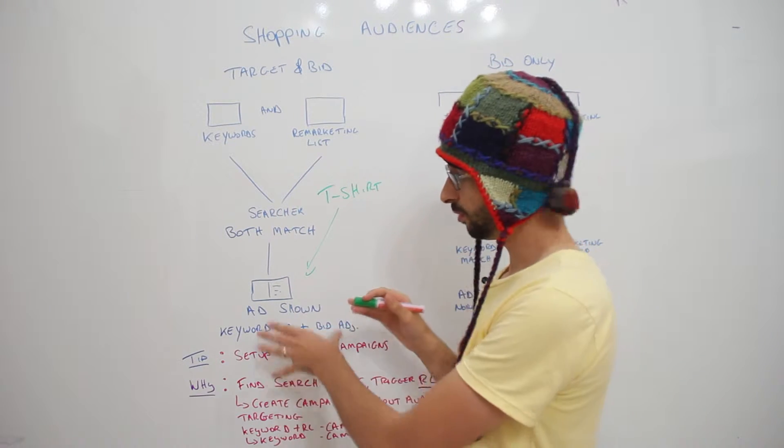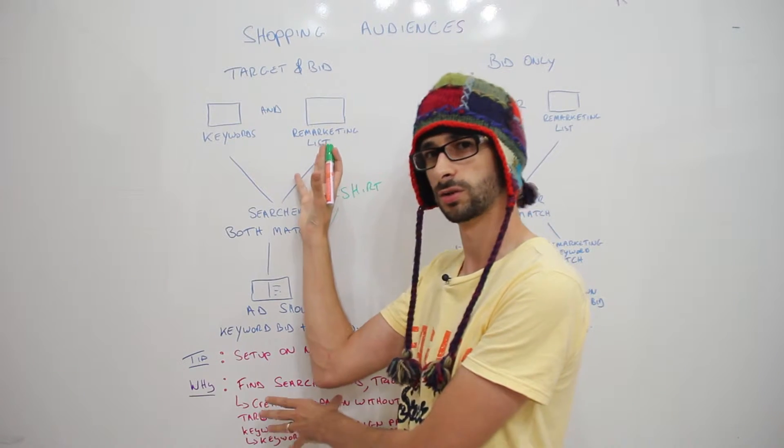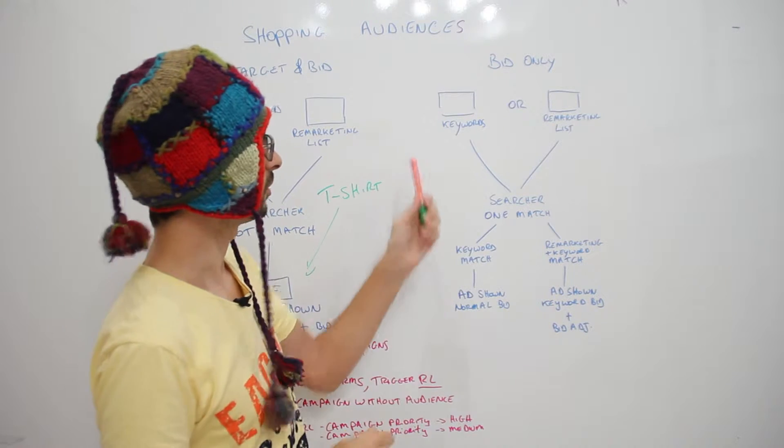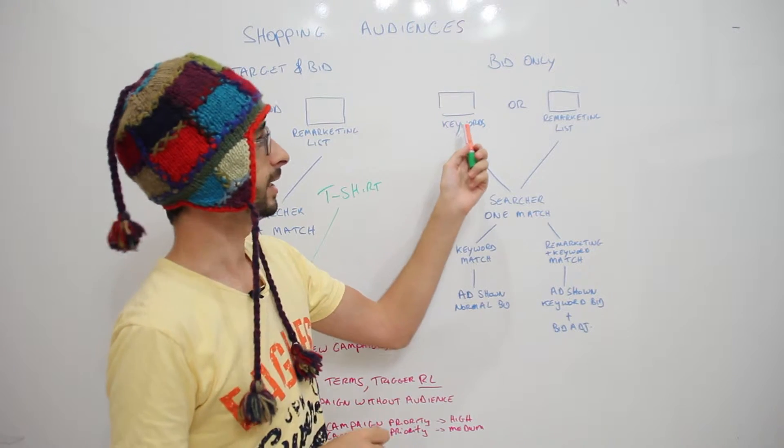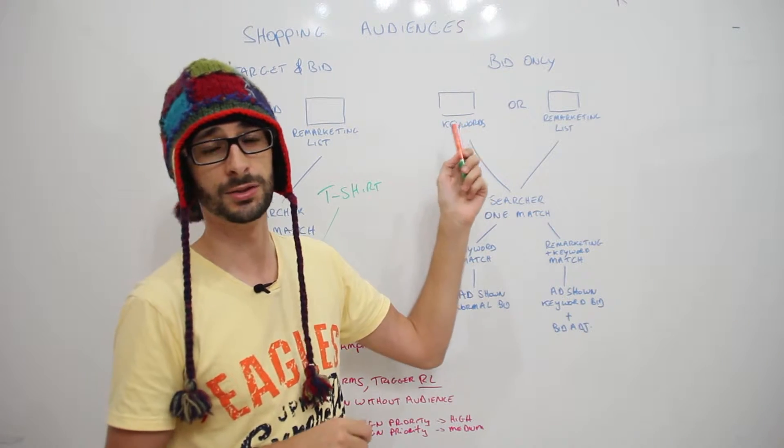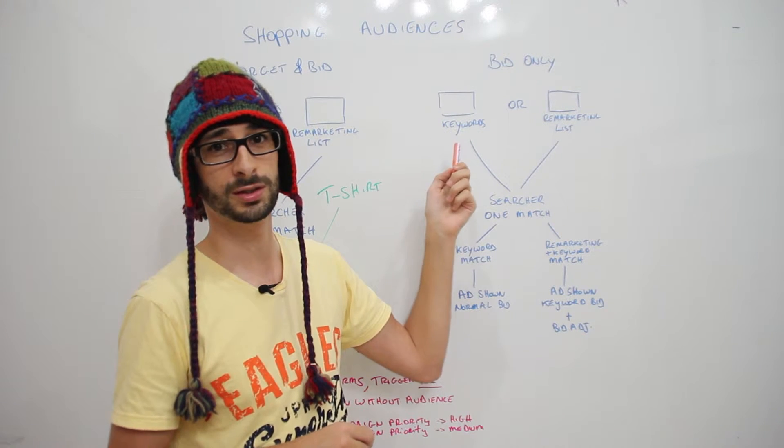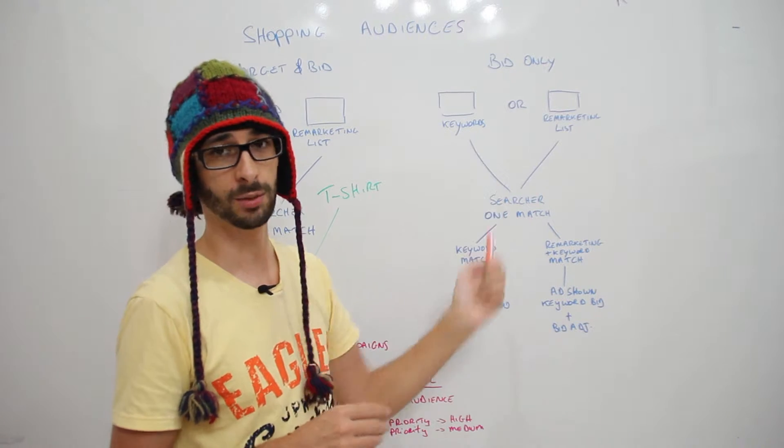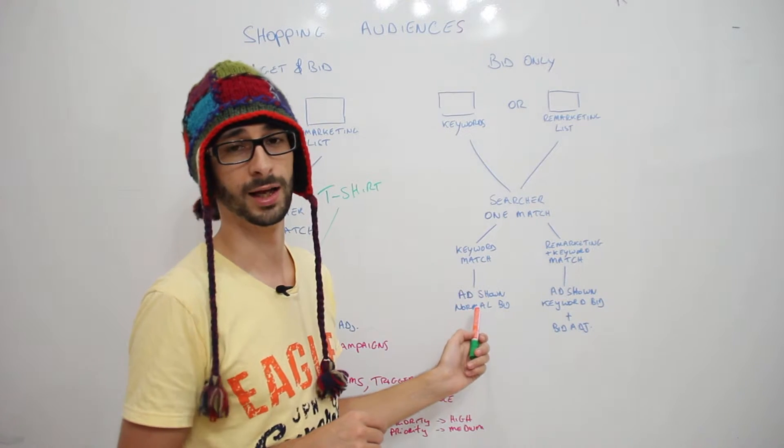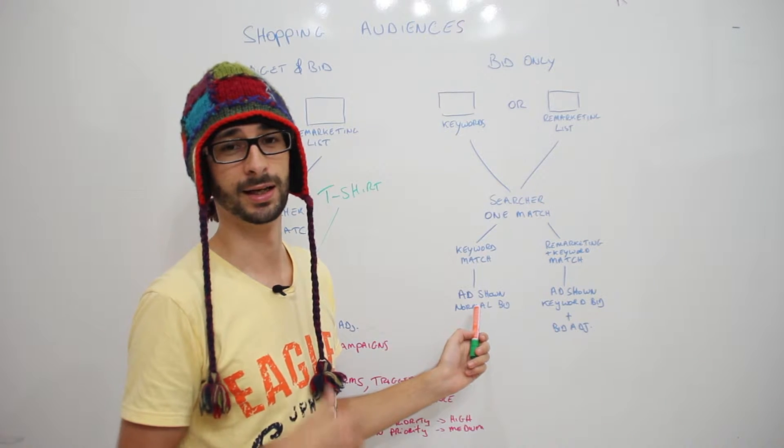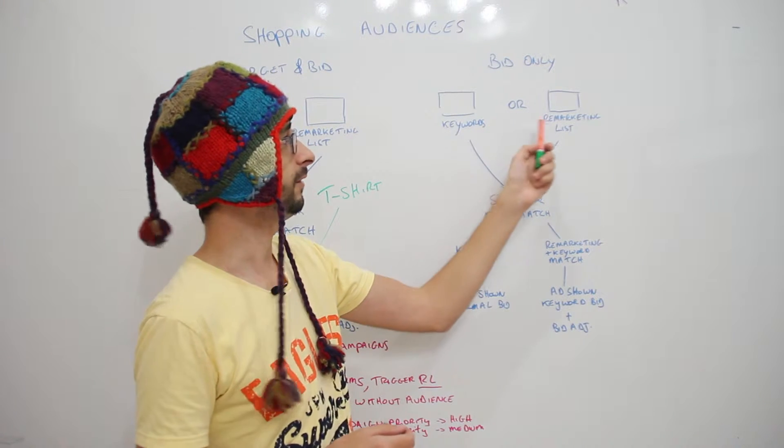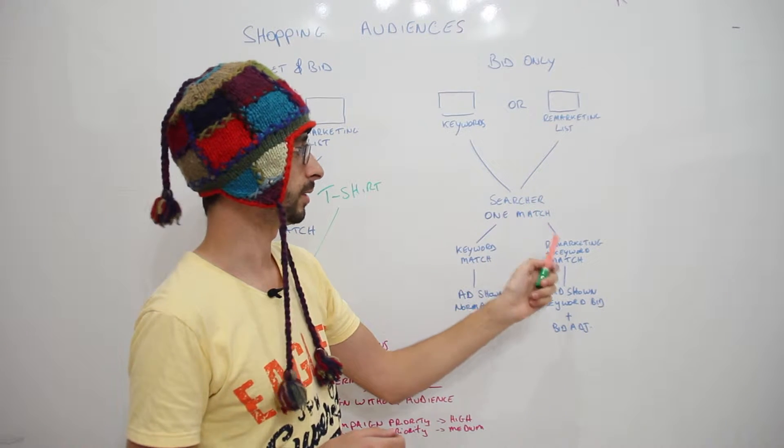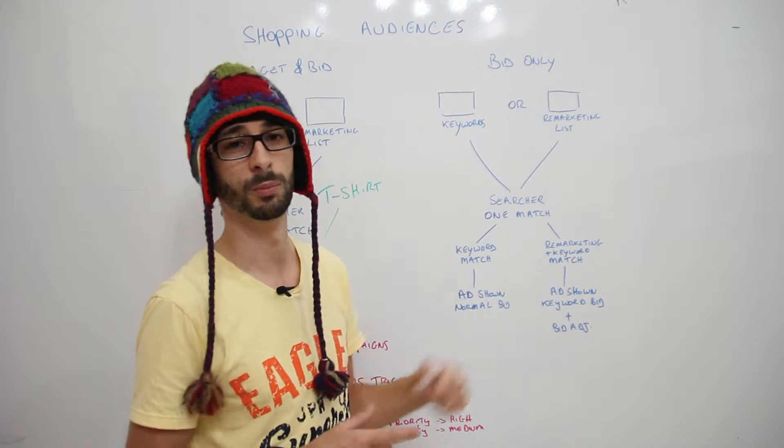Now before we continue, let's go and use bid only. So here we have a scenario: you can have a visitor that uses the keyword, for example t-shirt. If it matches just with the keyword, it will trigger a bid and your normal bid will be used. Or if it also matches up to your remarketing list, then it will match as well and add on top your bid adjustment.